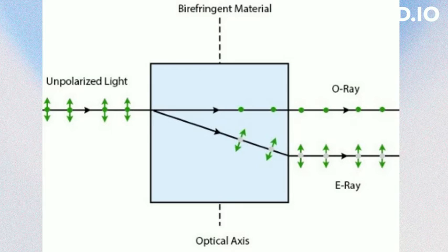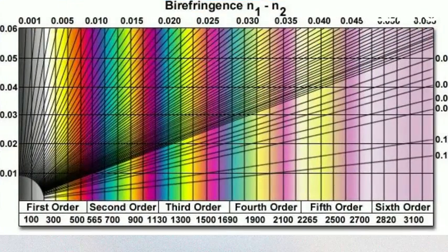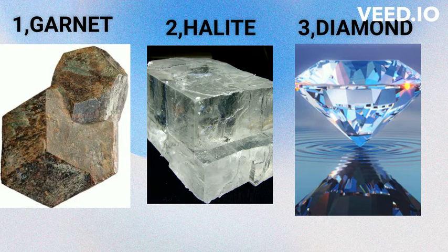Isotropic minerals have a uniform appearance. When viewed under a microscope with cross-polarized light, isotropic minerals appear dark or uniformly colored, regardless of the orientation of the microscope stage or the polarization filters. Isotropic minerals do not exhibit birefringence, which is the phenomenon where light passing through a material is split into two rays with different velocities, resulting in double refraction. Examples of isotropic minerals include garnets, isometric crystals, and glass.